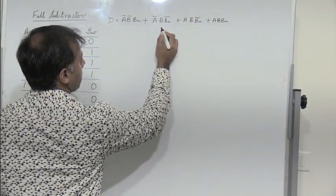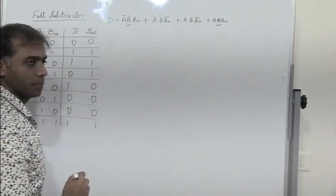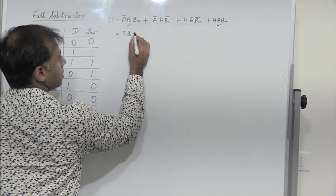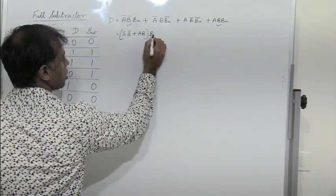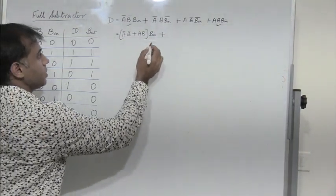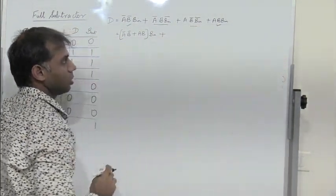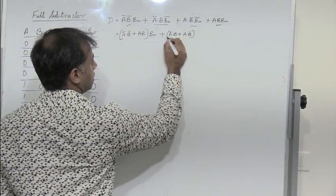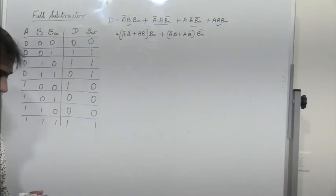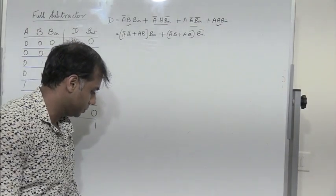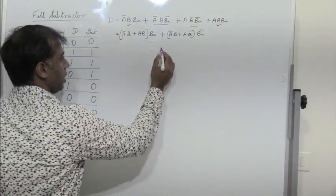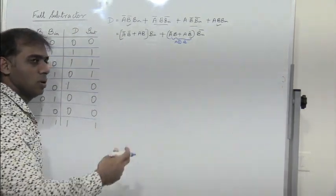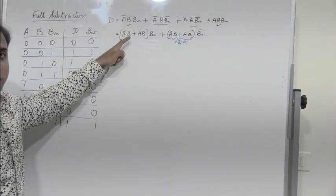Combining the first and last terms, let me take Bin common. So I have (A bar, B bar plus A, B) into Bin, plus from these two expressions I take Bin bar common, so I have (A bar, B plus A, B bar) into Bin bar. If you observe this expression, the expression A bar, B bar plus A, B is nothing but A XOR B. And AB plus A bar B bar is the expression for XNOR.